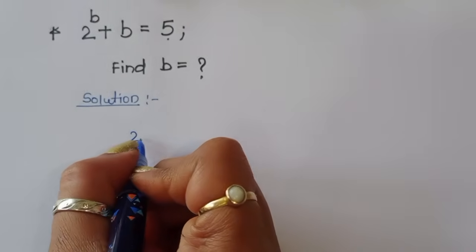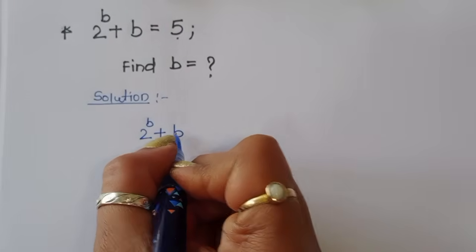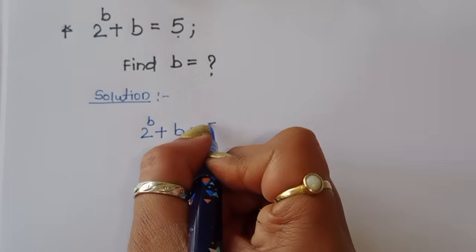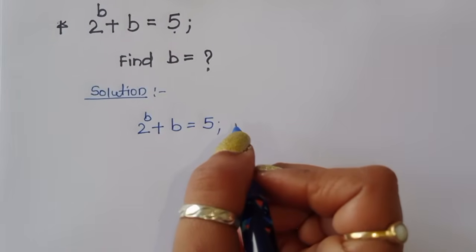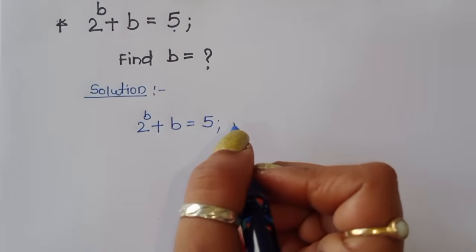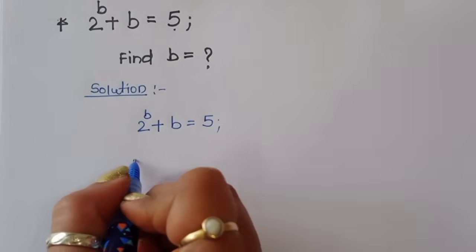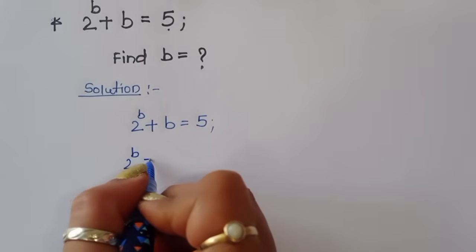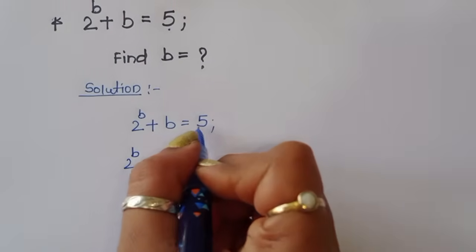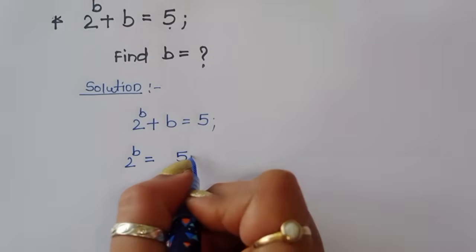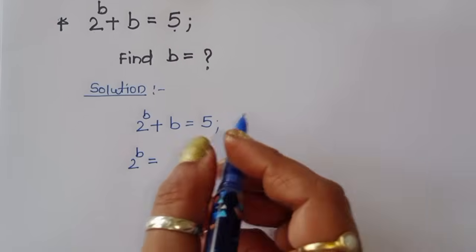The question is 2 power b plus b is equal to 5. We can write this as 2 power b is equal to 5 minus b.